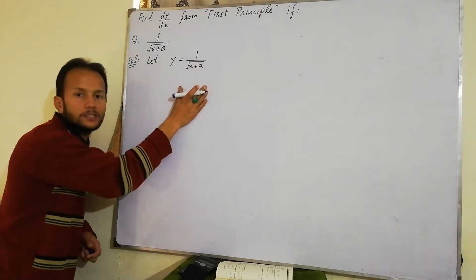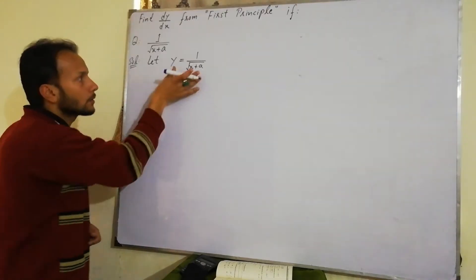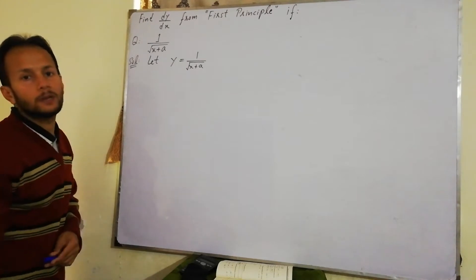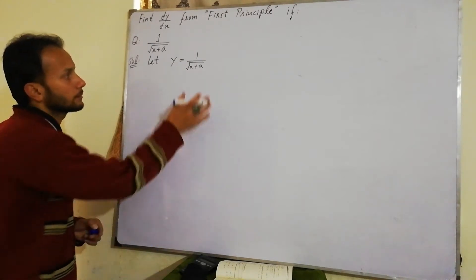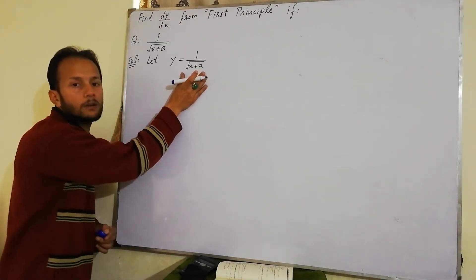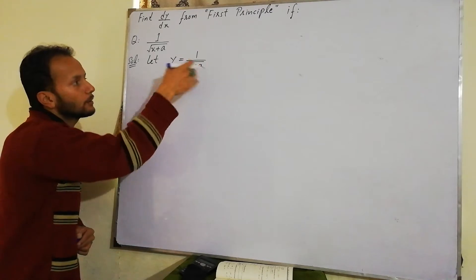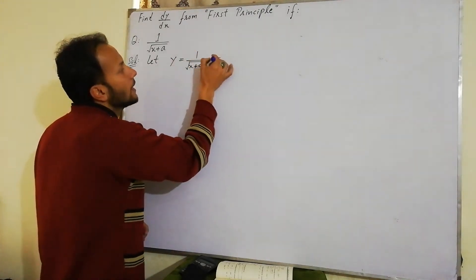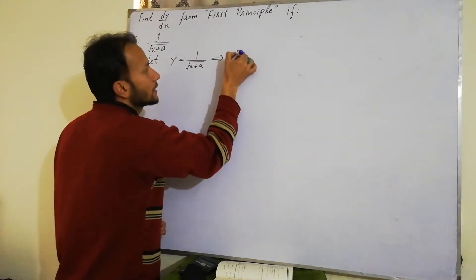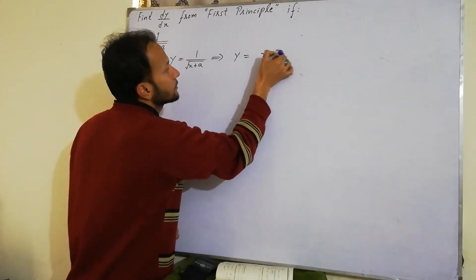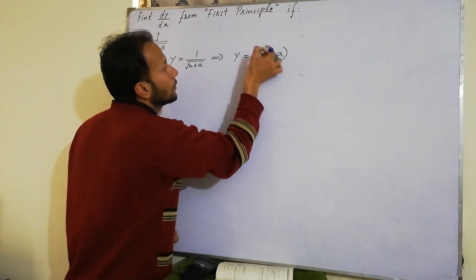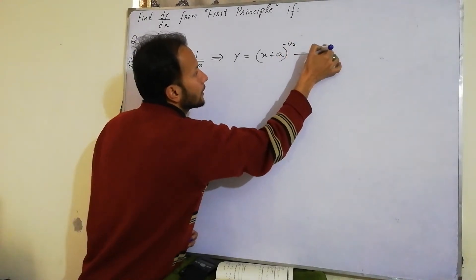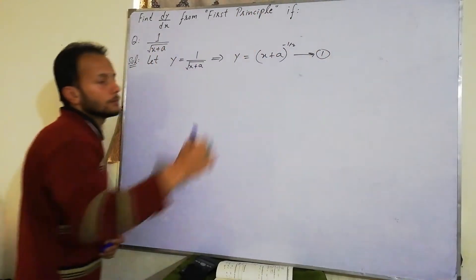Jo bhi radical sign ke saath neeche denominator mein ho, usse power ke saath upar le aao. Square root ka matlab power 1/2 hoti hai, aur jab upar jaayegi toh minus 1/2 ho jaayegi. Toh y = (x + a)^(-1/2). Isse hum equation number 1 label karte hain.